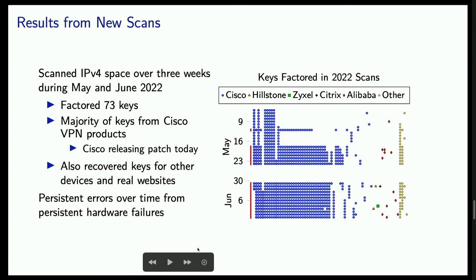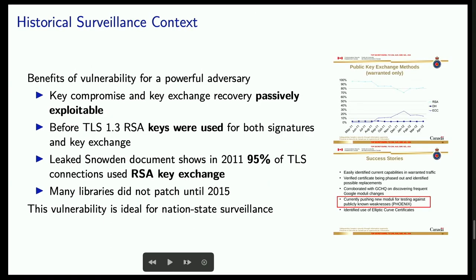So to summarize what we did: passive data collection, examination of old scans, new active scanning, and factoring some keys including one from Baidu. I'd also like to take a brief look back at the period between 1997 — when the vulnerability was described — and 2015, by which point most major libraries had patched. This vulnerability would have been ideal for a powerful adversary capable of collecting large amounts of internet traffic.